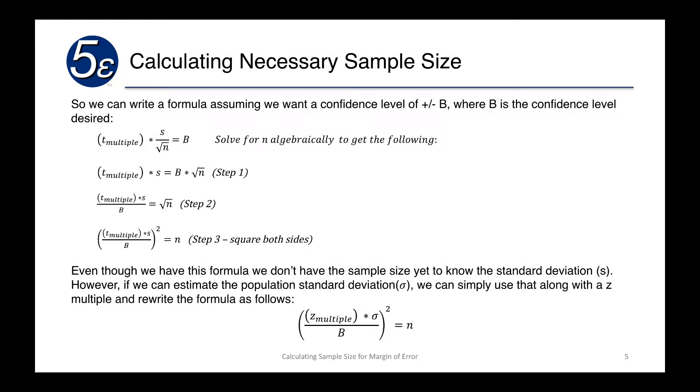So let's say we want to write this out and we want to have a confidence level of plus or minus some letter b. We would take our formula, the t multiple times the sample standard deviation divided by the square root of n equals b.